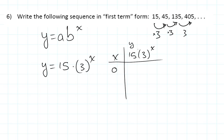When x is zero, y is going to be 15 times three to the zero power. Three to the zero power is equal to one, so this is just equal to 15.